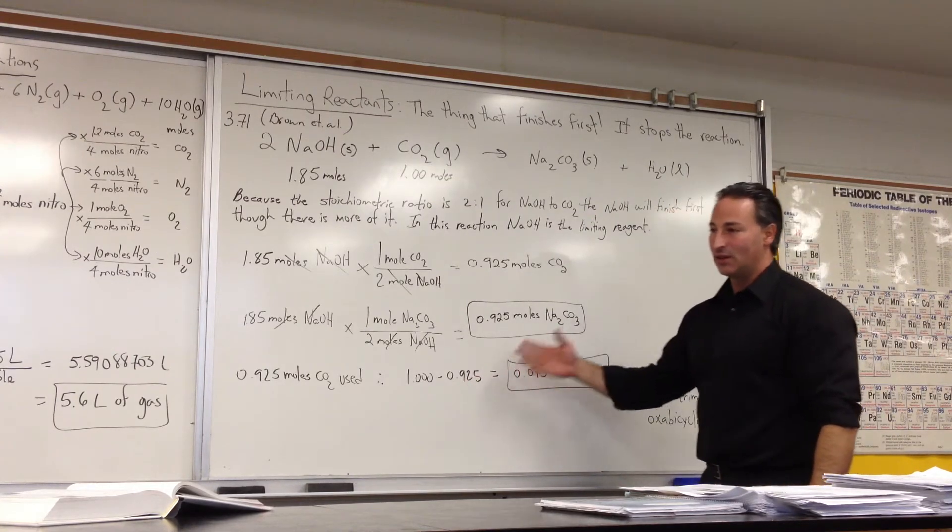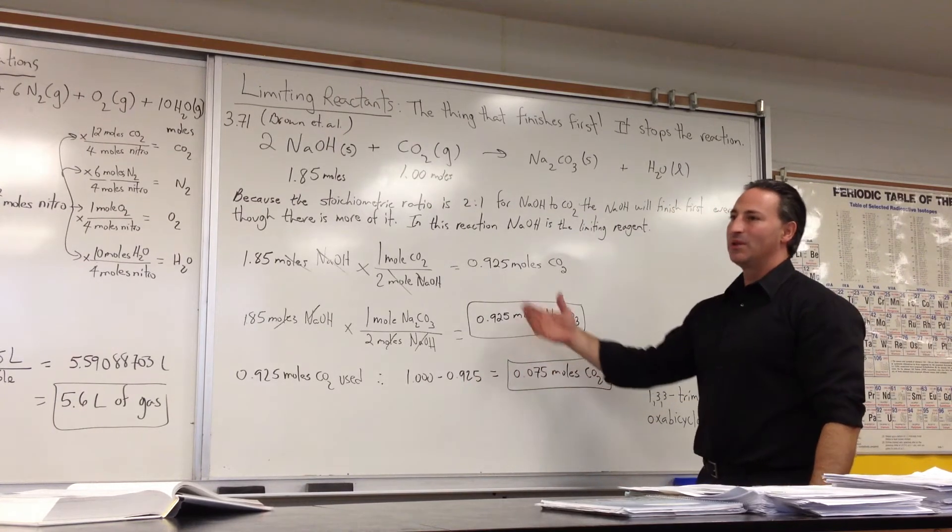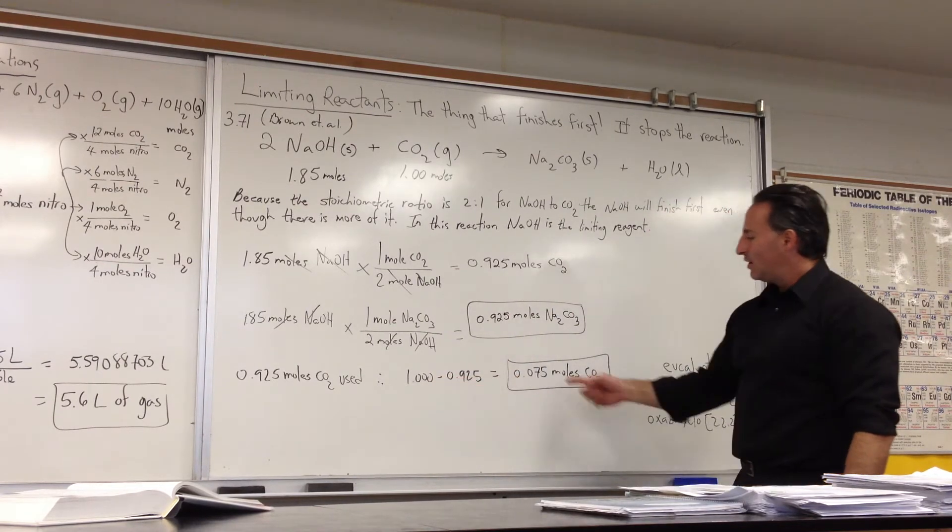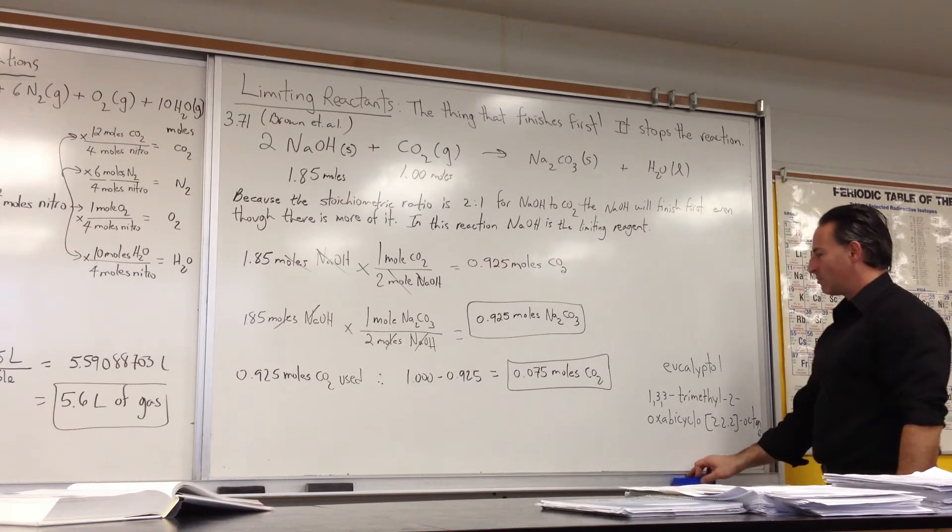The student does everything correctly, and you can tell they understand what's being done, but they fail to answer the question, so they lose a couple marks for that. Anyway, 1 minus 0.925 gives you what's left of the CO2, 0.075 moles.